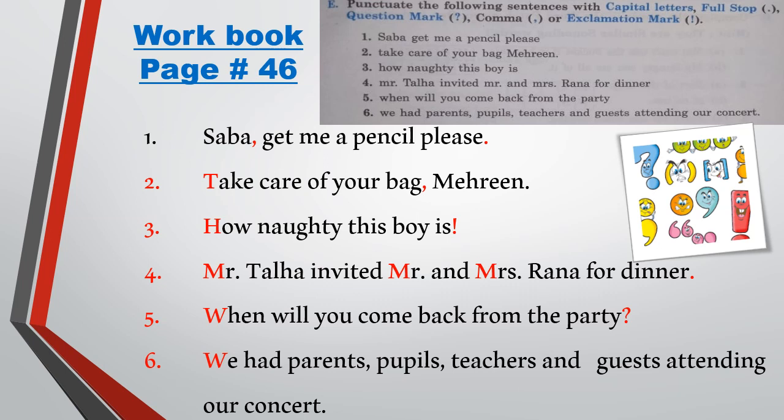Now open your workbook, page number 46, exercise E. The question is: punctuate the following sentences with capital letters, full stop, question mark, comma, or exclamation mark. The first sentence is: 'Sabha, get me a pencil, please.' The first letter is already capital. We put a comma after Sabha and a full stop after 'please.'